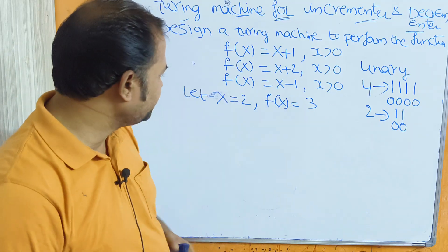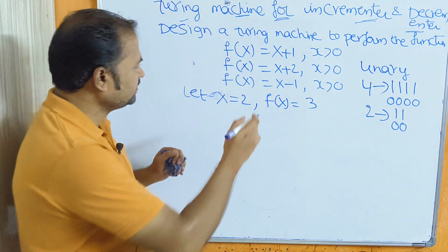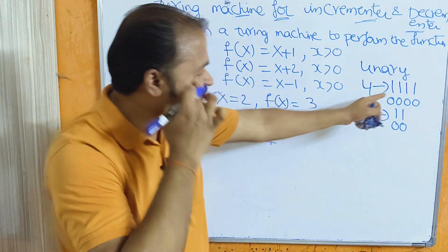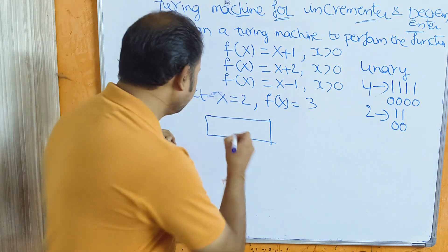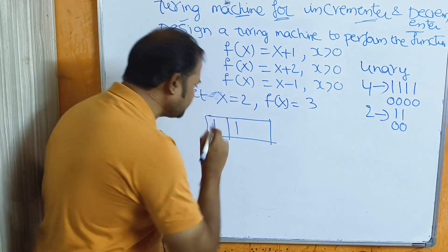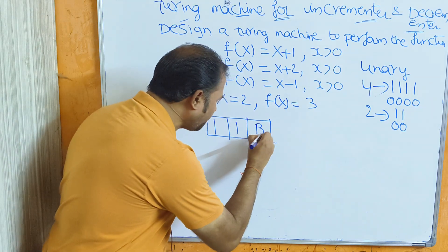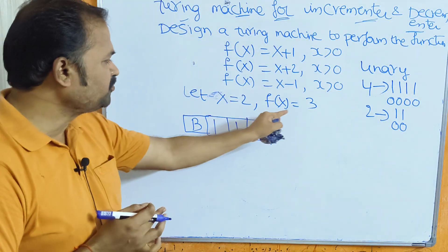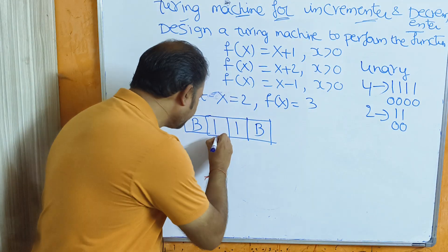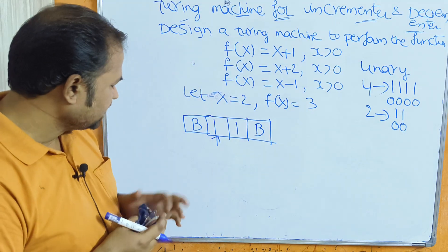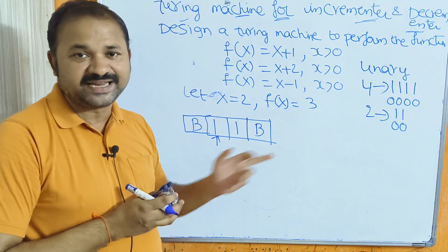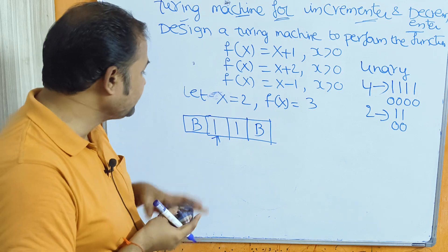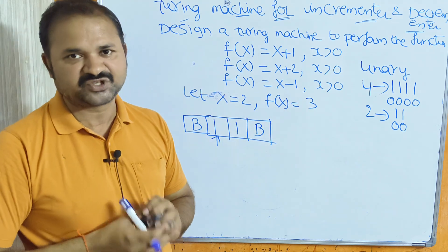Let us implement the addition operation. Let x = 2, represented as two 1s. Before and after the string, we can have any number of blank symbols. The output is 3, so we start from the first 1 and move the head towards the right until we get the blank symbol. At the blank symbol position, if we replace it with 1, then we will get three 1s, which is nothing but 3. That is the logic.